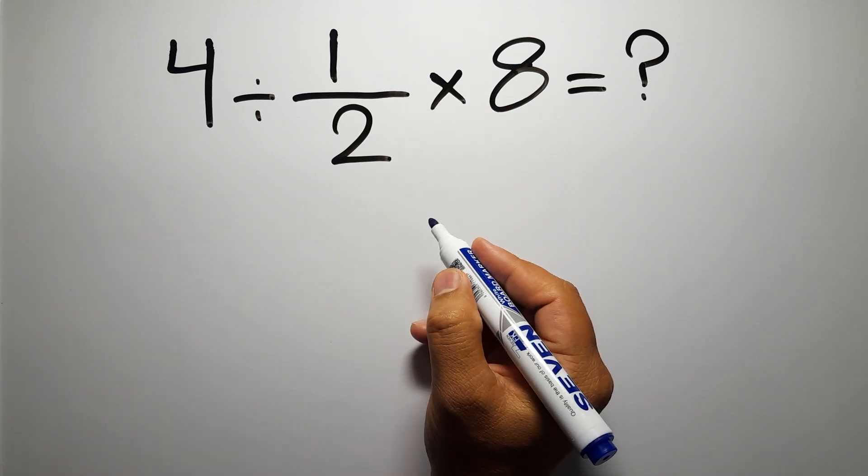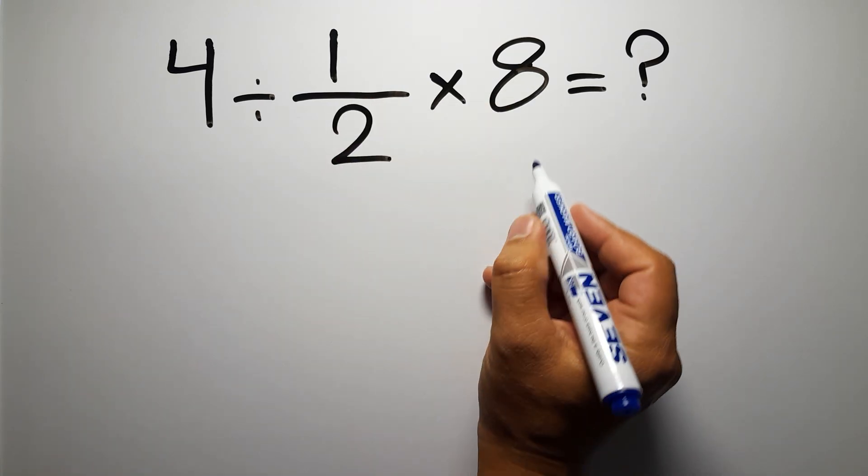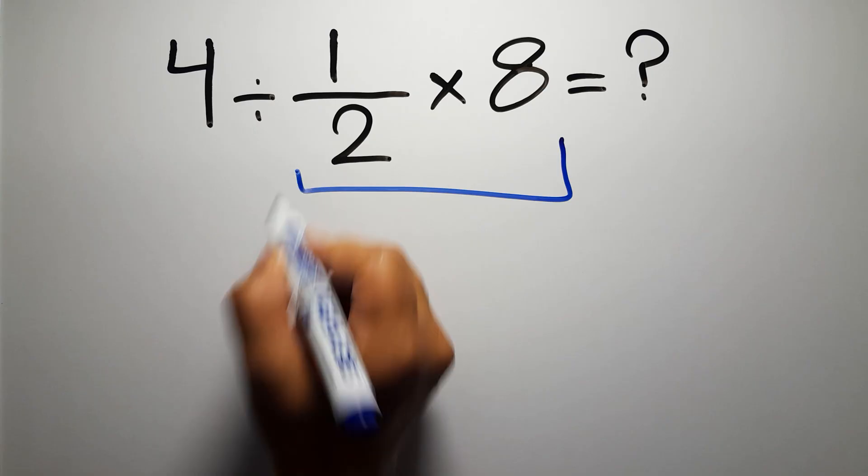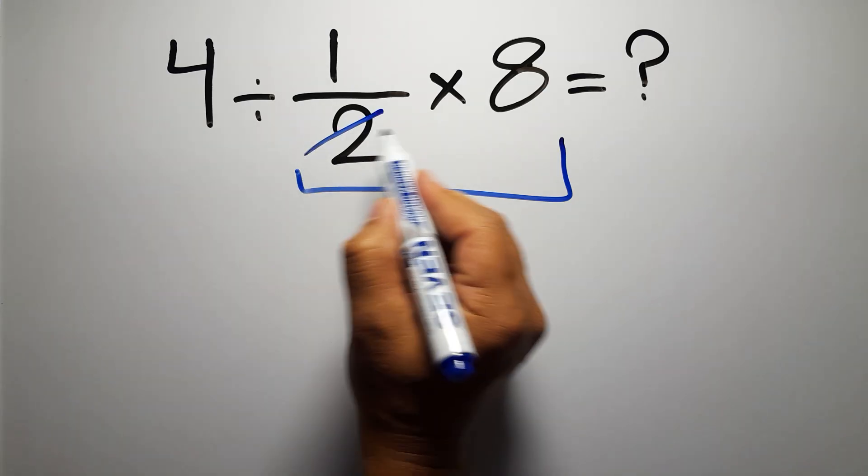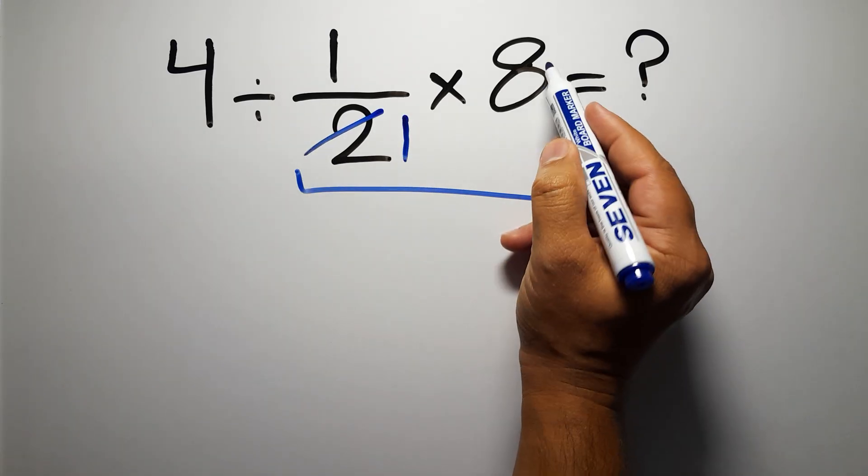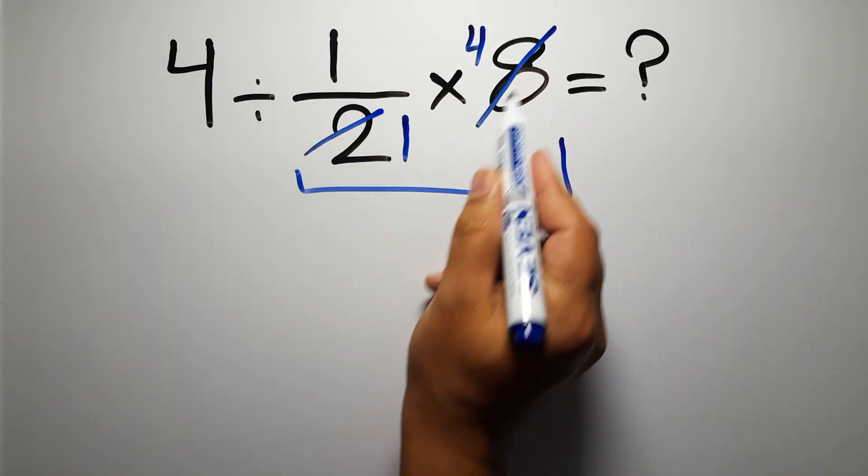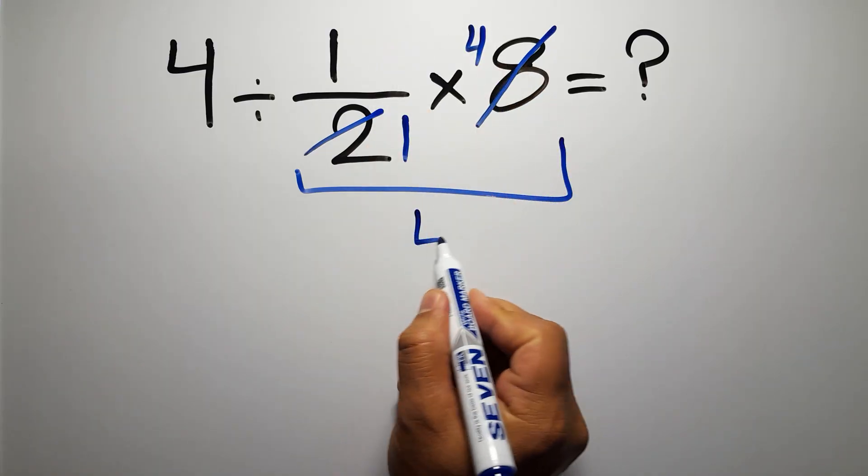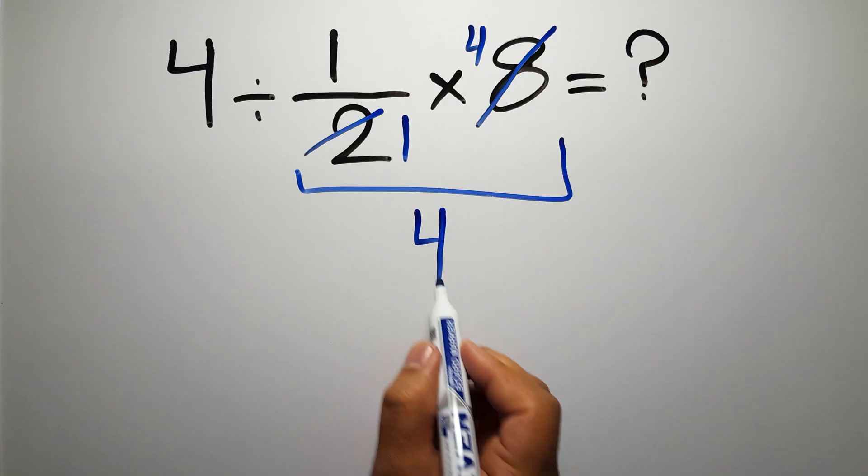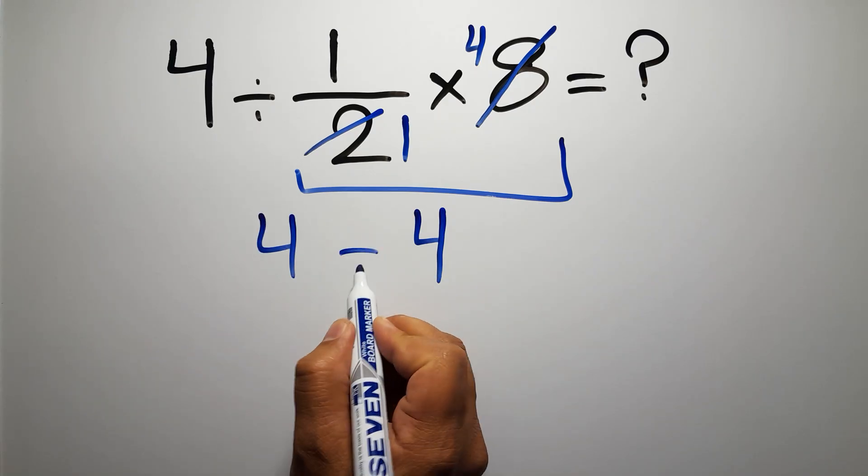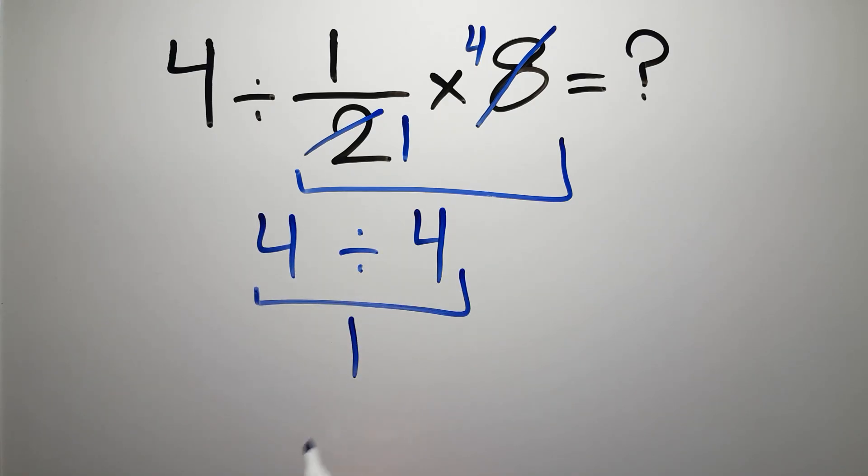First we do this multiplication: 1 over 2 times 8. 2 divided by 2 gives us 1, and 8 divided by 2 gives us 4. So here we have just 4, and 4 divided by 4 gives us 1. But this answer is not correct.